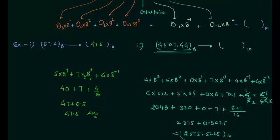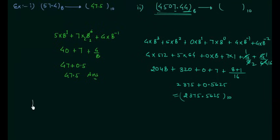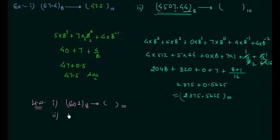Now we will move to the homework problems. Find the decimal equivalent of the octal number 601, and in the second problem find the decimal equivalent of 1070.02 in octal. So basically you have to do the octal to decimal conversion in both these problems. Once you have your answer, post it in the comment section.